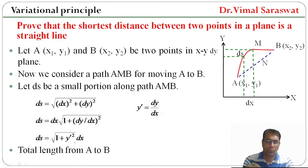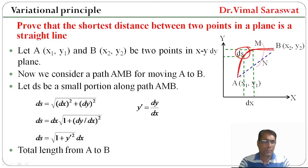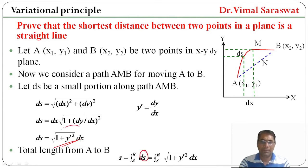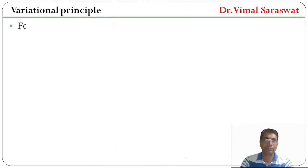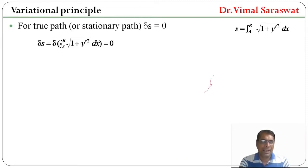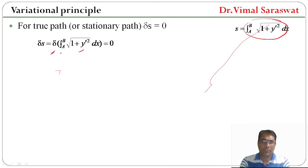The total length from A to B is S = ∫(A to B) ds = ∫(A to B) √(1 + y'²) dx. For the true or stationary path, δS = 0. So δS = δ∫(A to B) √(1 + y'²) dx = 0 for the stationary path.